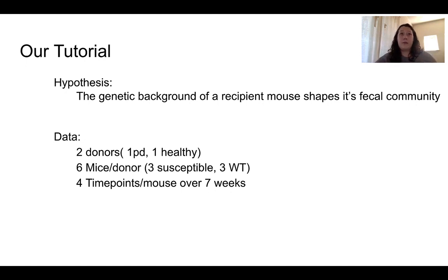Three of the mice were considered susceptible, which means they were predisposed to developing Parkinson's disease due to a mutation, while three of them were considered wild type, which means that they were resistant to developing Parkinson's. The mouse gut microbiome is characterized by sampling their feces, and we did that at four time points over a seven-week period.